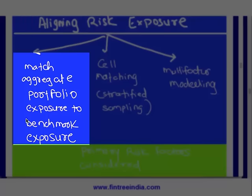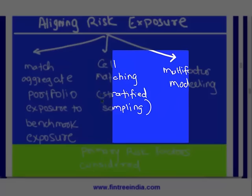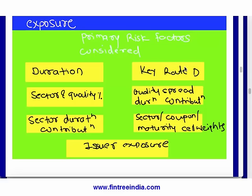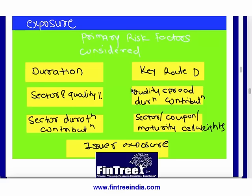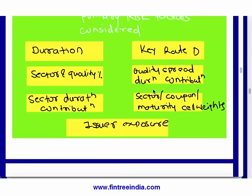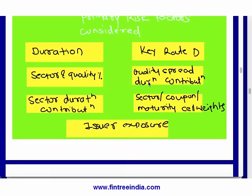The next learning outcome was aligning risk exposure. Three approaches: match aggregate exposure to benchmark exposure, cell matching, and multi-factor modeling. Primary risk factors include duration, key rate duration, and present value distribution (PVD). Key rate duration covers only key maturity points (e.g., year 2, 5, 7, 10), whereas PVD covers each maturity year. Barbell portfolios have higher PVD at the beginning and end, while bullet portfolios have higher PVD towards the end. Other factors include quality, spread duration contribution, sector duration, coupon, maturity, salvage, and issuer exposure.